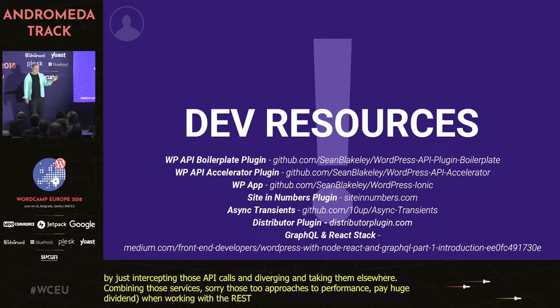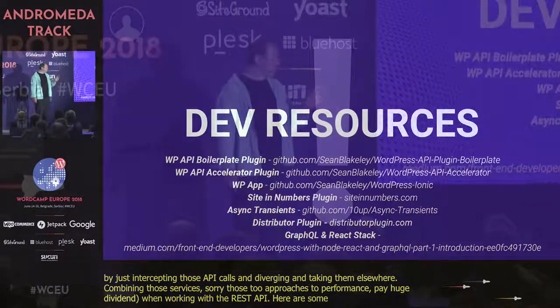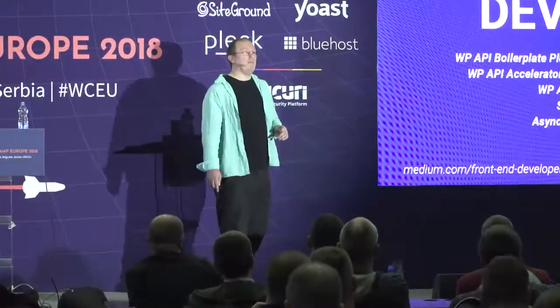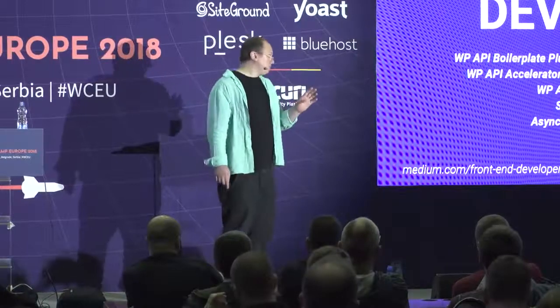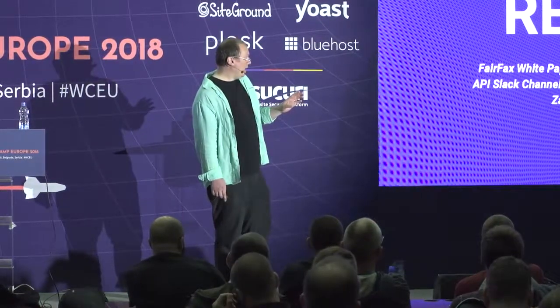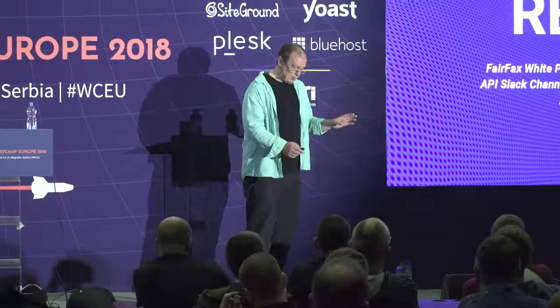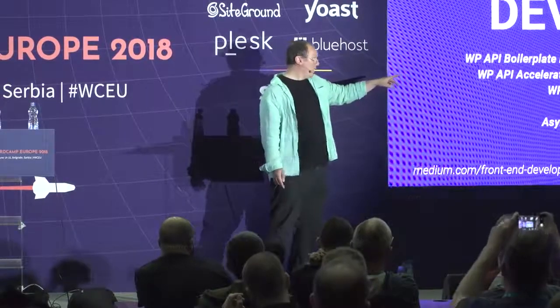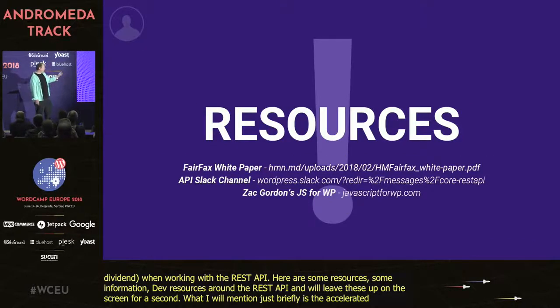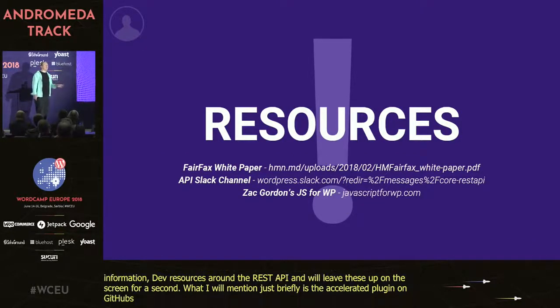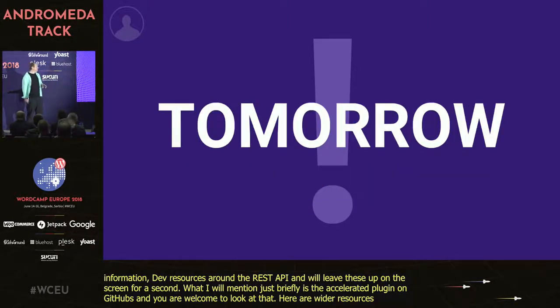Here are some dev resources around the REST API — I'll leave those up on screen. The accelerator plugin I was talking about is on GitHub, so you're more than welcome to go and have a look. And here are some wider resources around the API, including a white paper, the Slack channel, and so on.